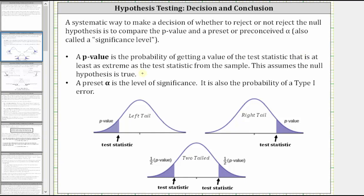Below we have the p-value illustrated as area under the normal curve for a left-tailed test, right-tailed test, and two-tailed test, where the test statistic can be a mean, standard deviation, proportion, z-score, or t-score. Notice how for the two-tailed test, if we are given the p-value to find each area, we do have to multiply by one-half or divide by two.